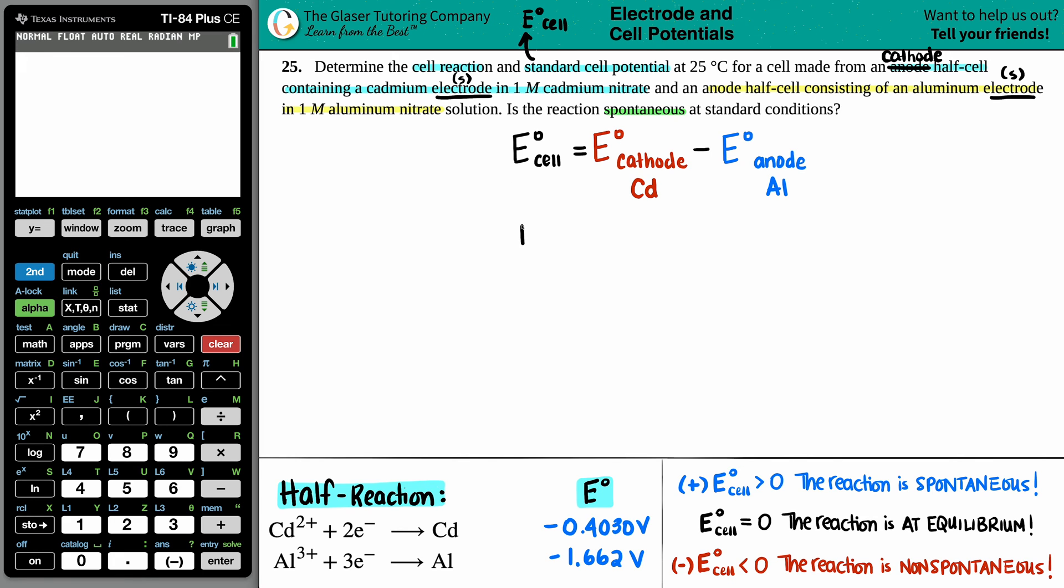So let's just find it out. E°cell equals. And by the way, if you are using cathode minus anode, emphasis on the minus, you do not need to change these values. The negative does it basically for you because both of these are cathode half reactions. The electrons are on the left side. But if we use the negative, that negates basically the cathode, turns it into an anode. But basically, if you use the negative, you do not have to change the values in the back of the textbook.